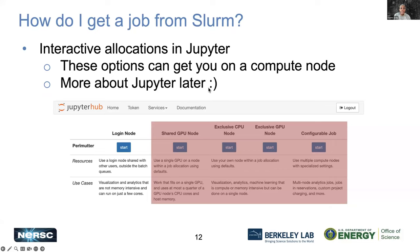For interactive allocations in Jupyter, there are different ways to access a compute node. Within JupyterHub, you can access a shared GPU node, exclusive CPU, exclusive GPU, or configurable jobs with specific constraints. It's very quick and easy to get a job using JupyterHub. As Lippy mentioned, it makes things simple — you can access it from a web browser quickly and easily.